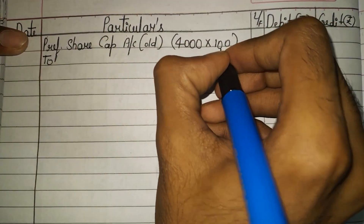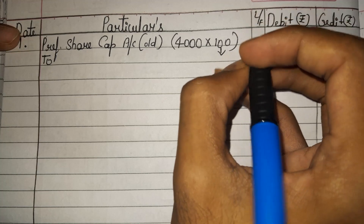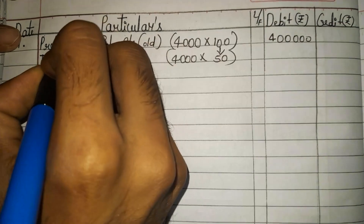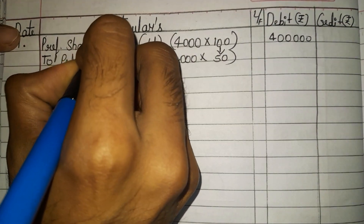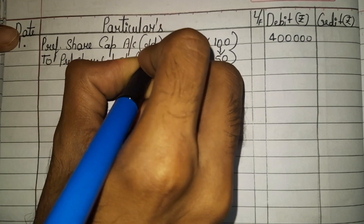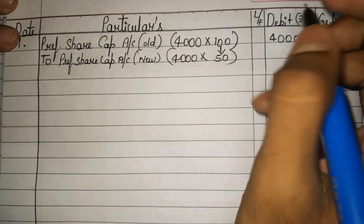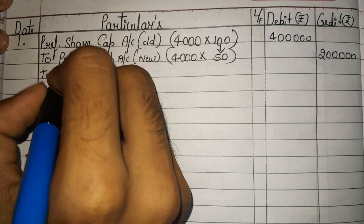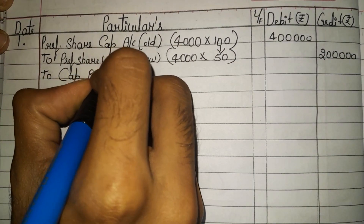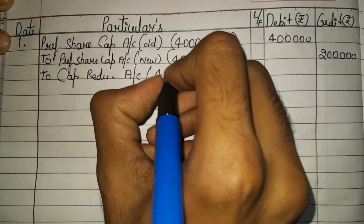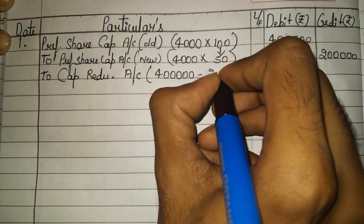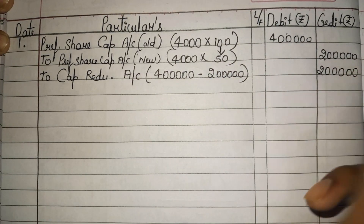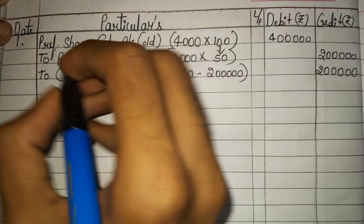Now that 100 rupees is being converted to 50 rupees for the same shares. So 4000 into 50 gives the new preference share capital of 2 lakh. The remaining balance is transferred to capital reduction account — from 4 lakh we subtract 2 lakh, so the remaining 2 lakh is transferred to capital reduction account. This 2 lakh is the sacrifice made by preference shareholders.